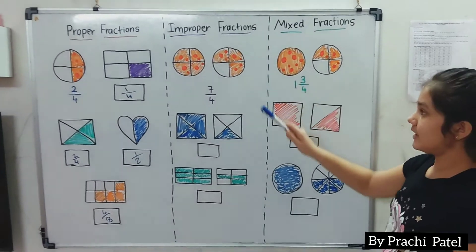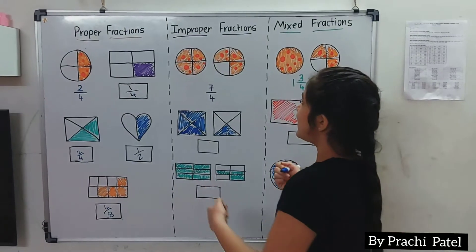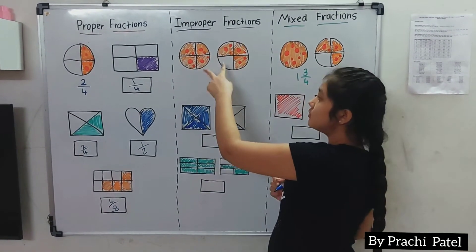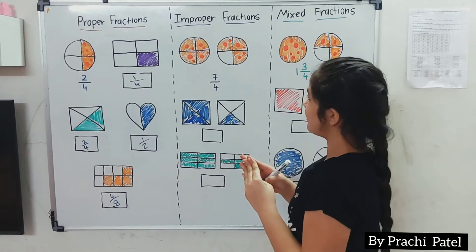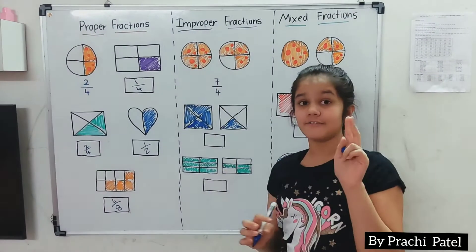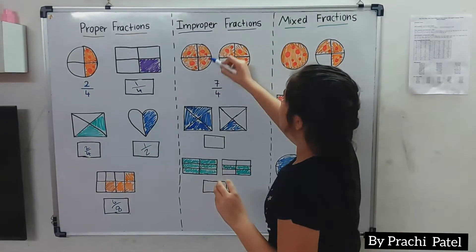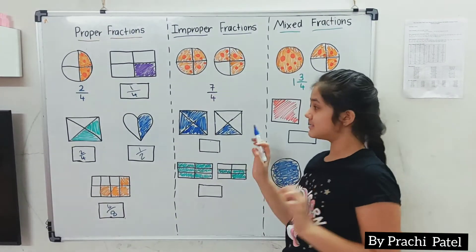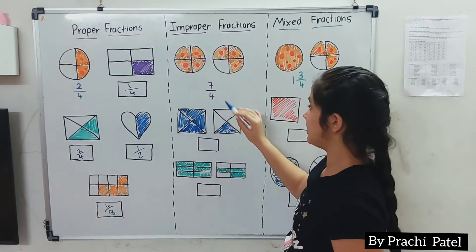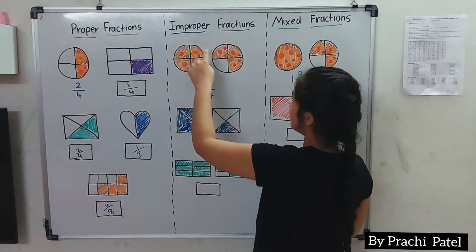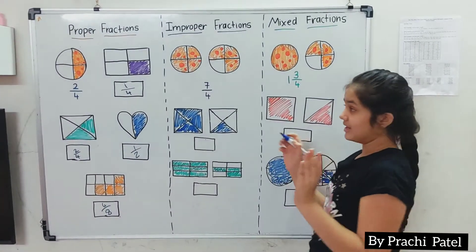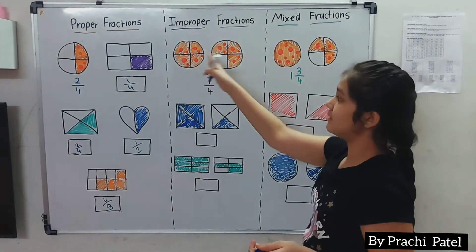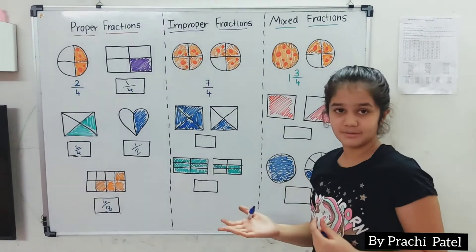Now let's go on to improper fractions. An improper fraction is when I have two pizzas and I ate one whole, and I want to include both pizzas. Each pizza has 4 pieces, so the denominator is 4. Then I count all the pieces I have: 1, 2, 3, 4, 5, 6, 7 — so I write 7 in the numerator. You add the numerator across both pizzas and the denominator stays the same.